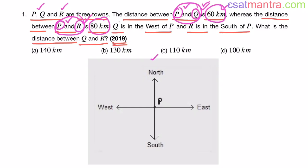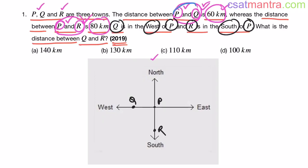Q is in the west of P — we have P here, west of P in this direction, so Q is here. R is in the south of P — south is this direction, so R is here. The distance between P and Q is 60 kilometers, and the distance between P and R is 80 kilometers.